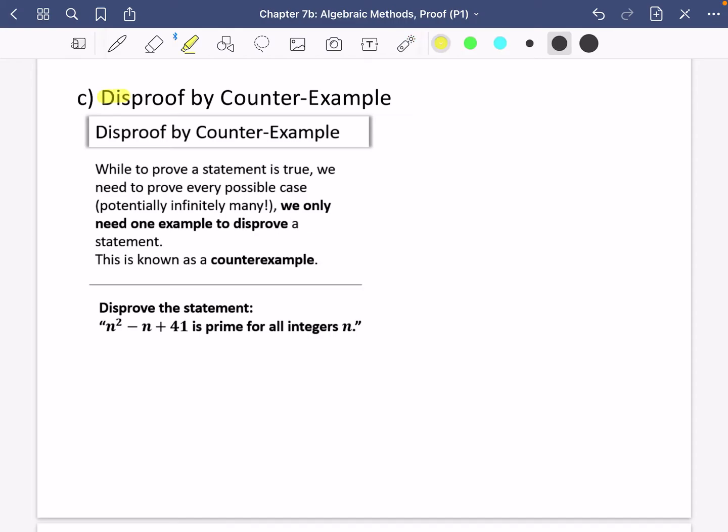Okay, so this one is different. This time it is a disproof. We're just trying to show that something is not true. So for disproof by counterexample, while to prove a statement is true we need to prove every possible case, potentially infinitely many, a bit like what we did with the even numbers and the odd numbers. We only need one example to disprove a statement, and this example is known as the counterexample.